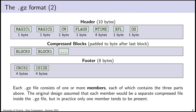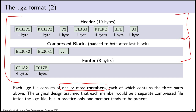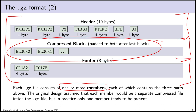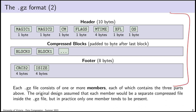The structure of a GZIP file broadly consists of three pieces. Formally, a .gz file consists of one or more members — a member is basically one compressed file. Each member contains a header, some compressed data, and a footer. Originally .gz was designed to allow batching multiple files, but those archival features weren't comprehensive, so people prefer tar. In practice, generally there's only going to be one member present, and we're going to follow that convention.